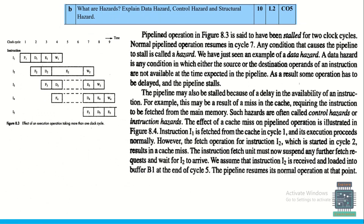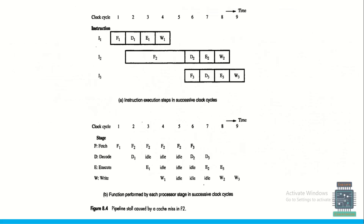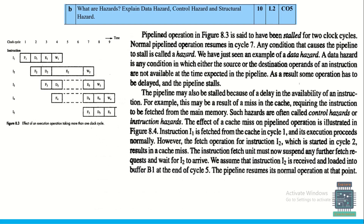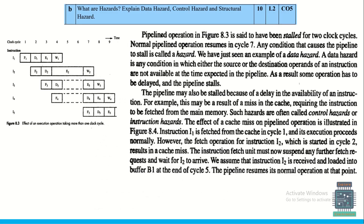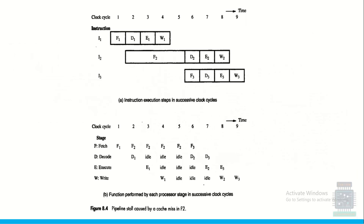To explain hazards — data hazard, control hazard, and structural hazard: the explanation of all three types is taken from the prescribed book. Make a note in your own words, and since this is for 10 marks, write the answer clearly and comprehensively.